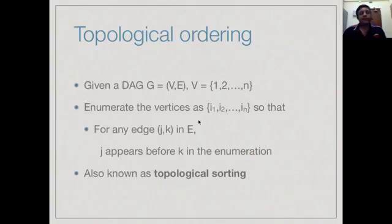Any directed acyclic graph can be topologically ordered. If we think of the vertices as being 1 to n, we can write them out in a sequence such that for every edge jk, j appears before k in the sequence. So if we think of these as tasks with dependencies, it means we can do the tasks such that before doing k, we would have finished its dependent task j. This is called a topological sorting.